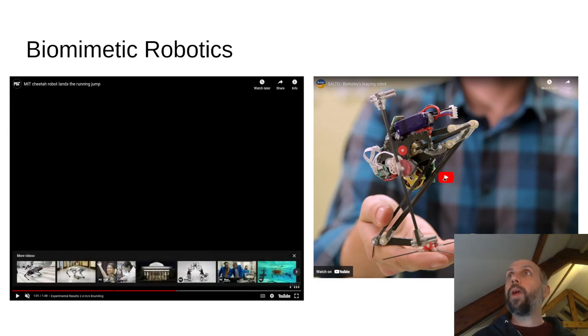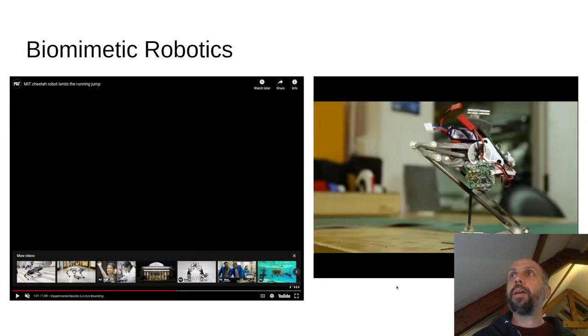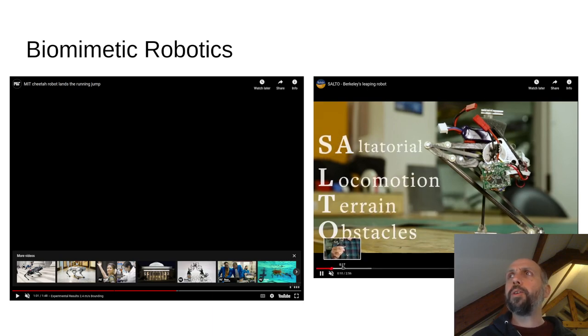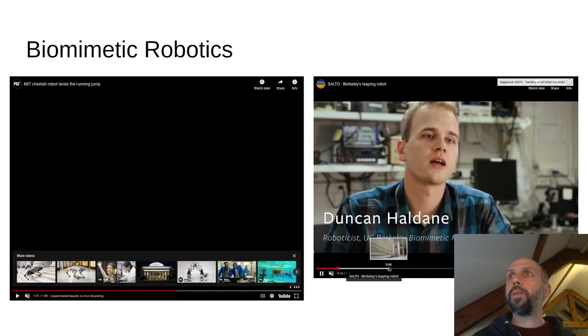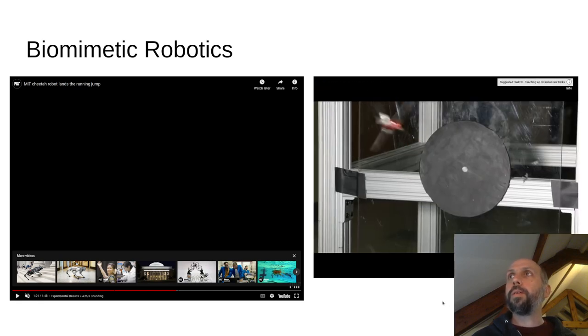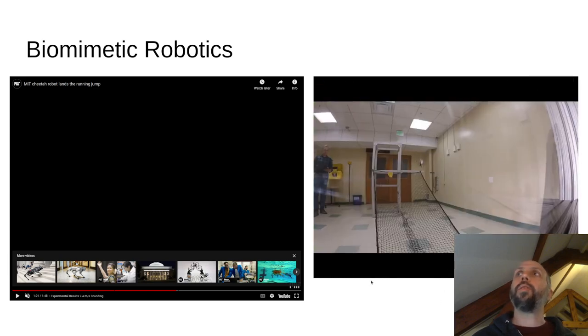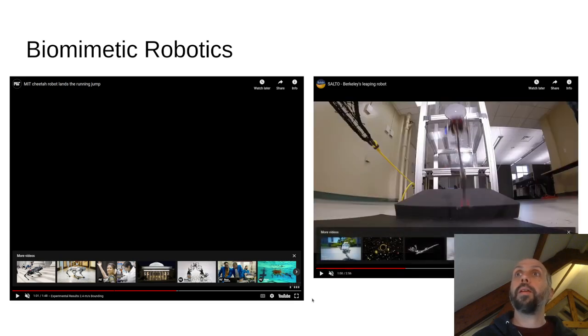On the right is a pretty cool little robot. It's a jumping robot that tries to jump quite high for its size and mass and uses some basic principles and spring elements to be able to jump off walls. So we can model that and figure out how to optimize and make something like that work in this class.